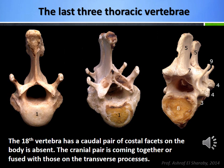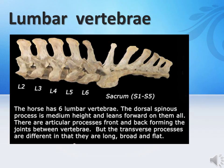The lumbar vertebrae are usually 6 in number and have regional characteristics including expanded and elongated transverse processes. The articular processes are interlocking with each other. Cranial articular processes are fused with mammillary processes and present dorsally concave surfaces. Caudal articular processes project from the arch with convex articular surfaces. Spinous processes resemble those of the last thoracic vertebrae and are usually about equal in height.